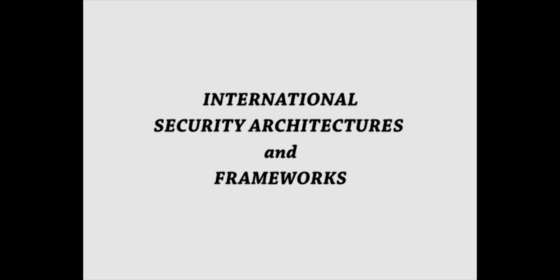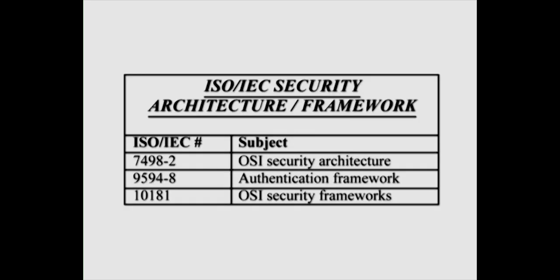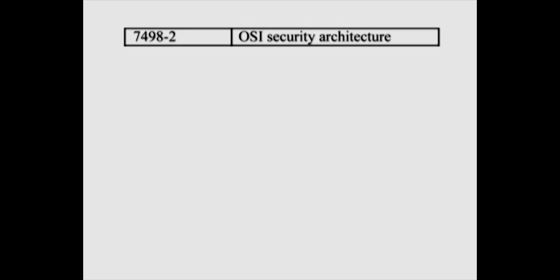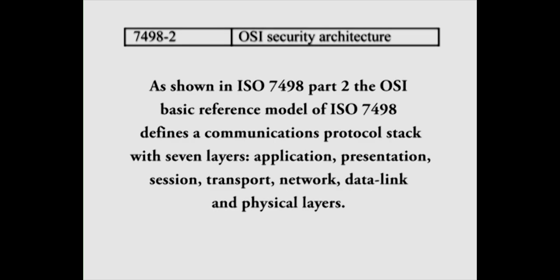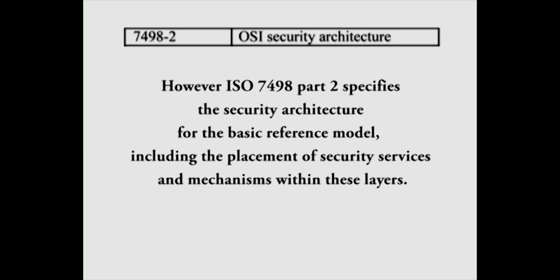Let us move on to international security architectures and frameworks. ISO 7498 part 2 specifies the security architecture for the OSI basic reference model, which defines a communication protocol stack with 7 layers: application, presentation, session, transport, network, data link and physical layers. ISO 7498 part 2 specifies the placement of security services and mechanisms within these layers.